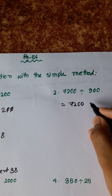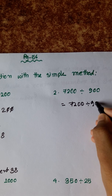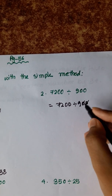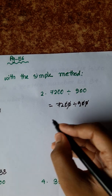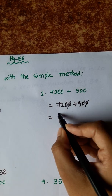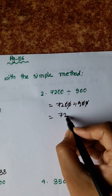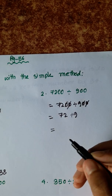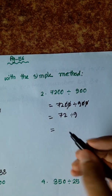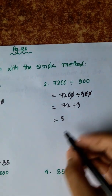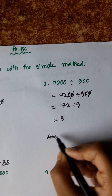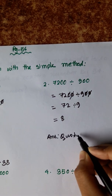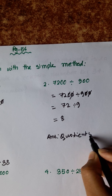Next, 7200 divided by 900. The zeros are cut. Then the left over is 72 divided by 9. We know 8 times 9 is 72. So the answer is 8. Answer quotient is 8.